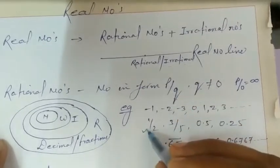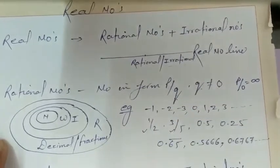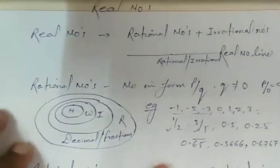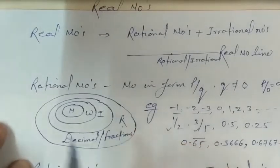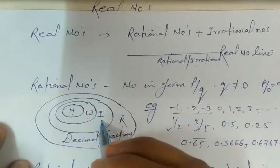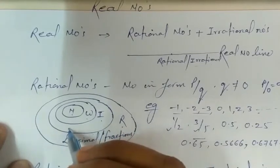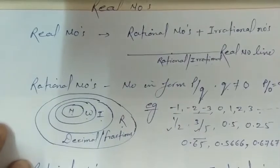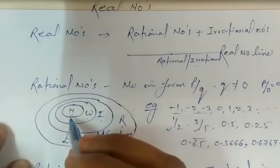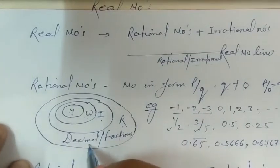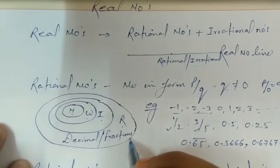Examples like 1 upon 2, 3 upon 5 — these are your rational numbers. Rational numbers are the combination of natural numbers, whole numbers, and integers. Integers are all negative and positive complete numbers including 0. So rational numbers are the combination of natural, whole, and integers, as well as decimal and fractional numbers.